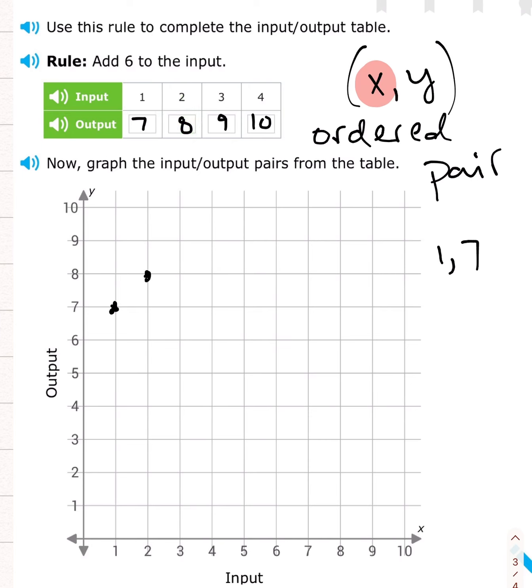All right. Moving on to the next point. 3, 9. Over 3, up 9. Over 3, up 9. There we go. I'm starting to see a pattern. Can you estimate where my next point will be?